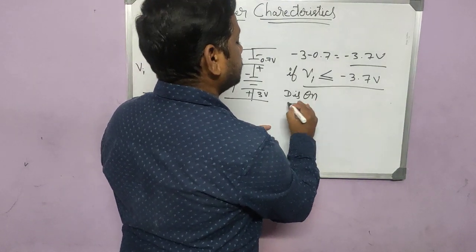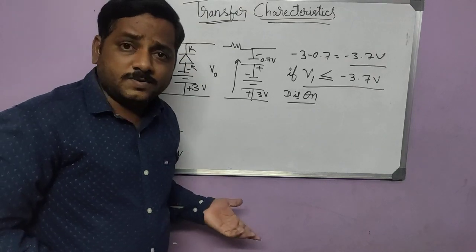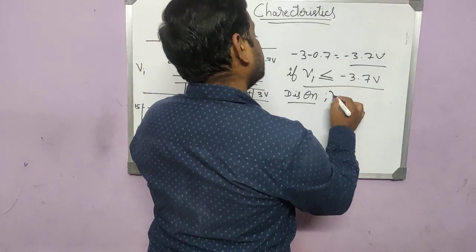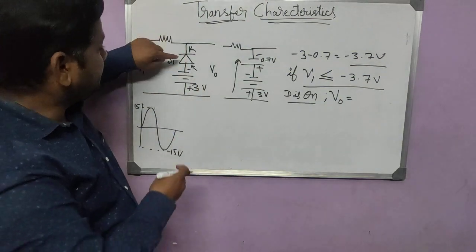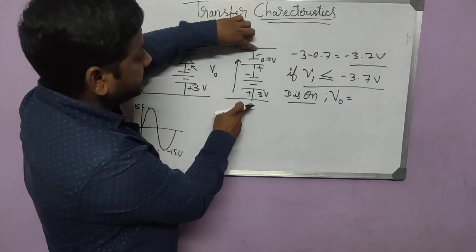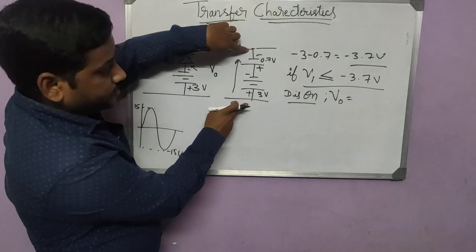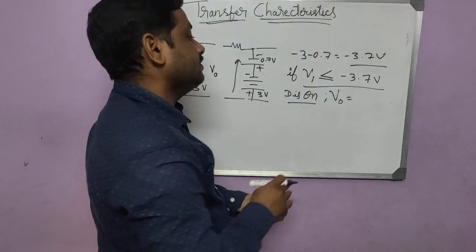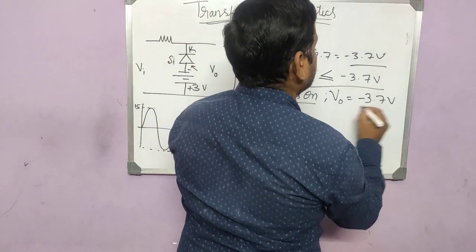If cathode is less than anode, the diode will be ON. At this condition, the output voltage will equal the voltage present at that node, which is minus 3.7 volts. So output voltage equals minus 3.7 volts when the diode is ON.